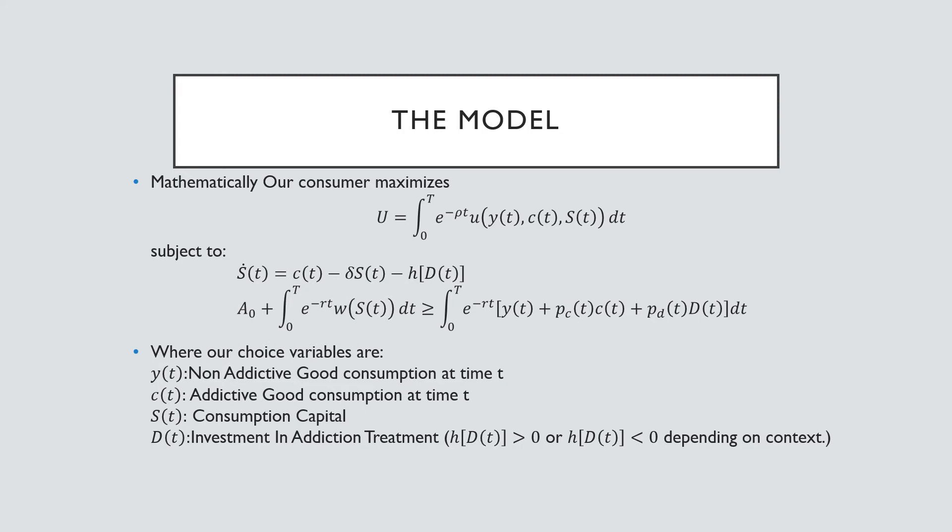Mathematically, what we said could be written out in really just three lines, where we have a consumer who's maximizing his lifetime utility subject to this law of motion of addiction capital, and this budget constraint here, where our good which is non-addictive we're going to call a numerary — meaning we normalize the price to being one — where our choice variables are: the amount of non-addictive good consumption at each moment T, the amount of addictive good consumption, consumption capital, and the investment in treatment, where H as a function of DT is either increasing or decreasing depending on the context.